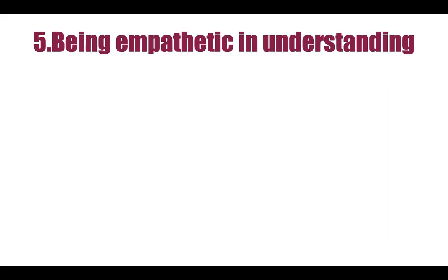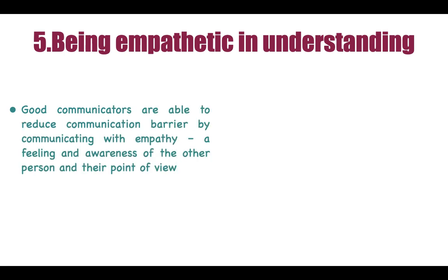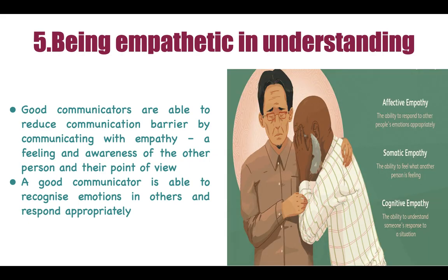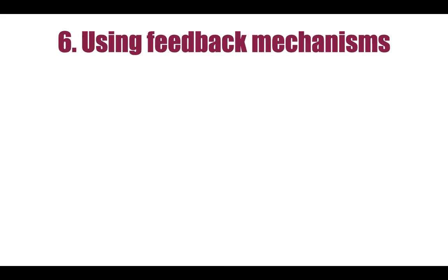The fifth way is being empathetic and understanding. Empathy means being able to understand the other person's feelings and point of view, which makes you a good communicator and reduces communication barriers. There are three types of empathy: affective empathy — responding to others' emotions appropriately; somatic empathy — feeling what the other person is feeling; and cognitive empathy — understanding someone's response to a situation. Incorporate all three types to have effective communication.